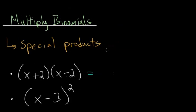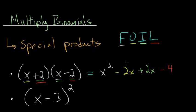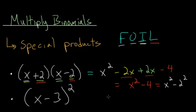Let's start with the difference of two squares. We're going to multiply it out using the FOIL method. Multiplying the first terms, x and x, we get x squared. The outer terms, x and minus 2, give minus 2x. The inner terms, plus 2 and x, give plus 2x. The last terms, plus 2 and minus 2, give minus 4. The middle terms, minus 2x and plus 2x, cancel each other out, leaving x squared minus 4, which is the same as x squared minus 2 squared. That's why we call it a difference of two squares.